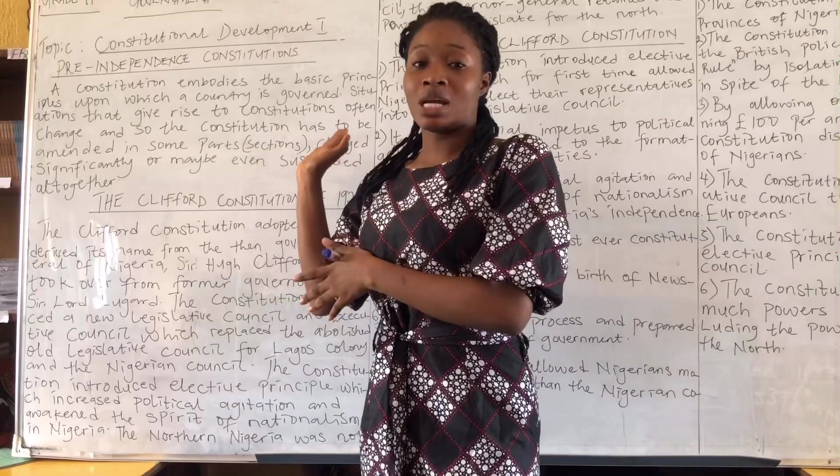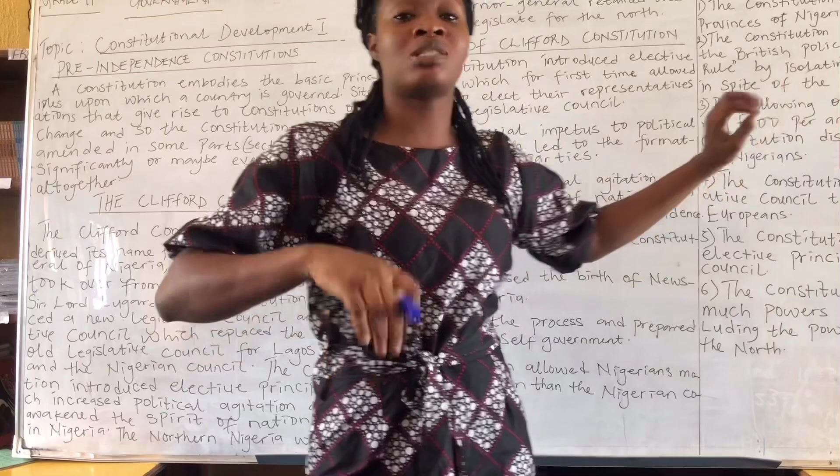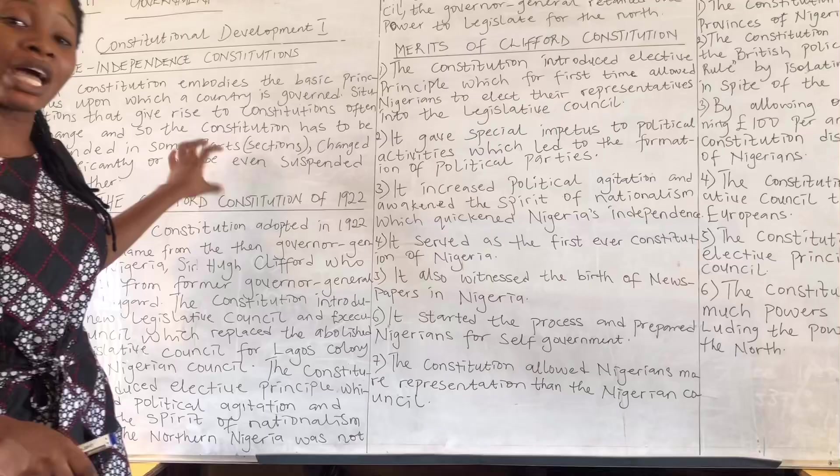The Governor General retained the power to legislate for the North. Initially, under the Nigerian Council — which comprised the executive and legislative councils — people were not elected. The governor could simply appoint representatives, saying 'you represent this faction, you represent that faction.' People were not allowed to vote or have their say. The introduction of the Clifford Constitution helped change all of this.